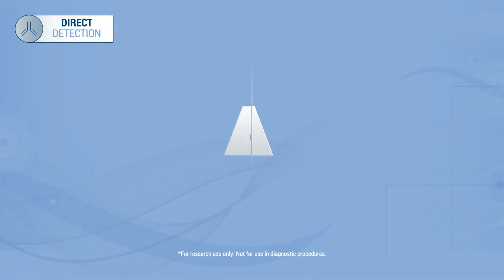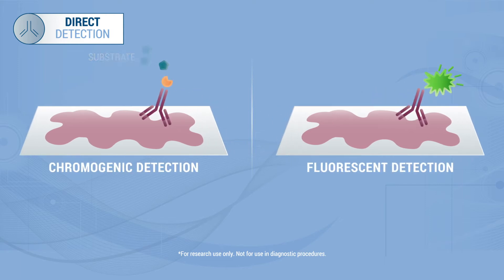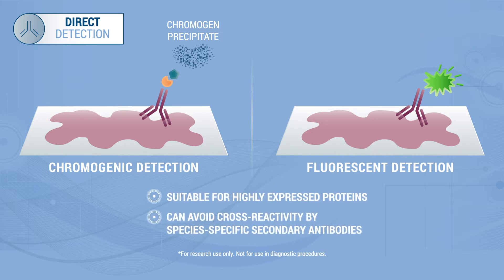Direct detection of markers involves the primary antibody being conjugated to an enzyme for chromogenic detection or directly to a fluorophore. This method can produce a sufficient signal if the proteins are highly expressed and can avoid cross-reactivity by species-specific secondary antibodies that are used for indirect detection.